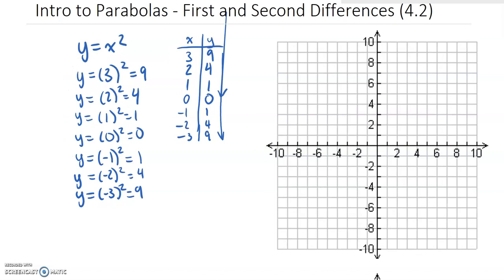If we plot all these points: starting at (3, 9), then (2, 4), (1, 1), (0, 0), and then we have the same thing on the other side. Because every parabola has symmetry, the points on the left side have the same y values as the ones on the right side. Then all we need to do is draw a line through those points, and this is y equals x squared.